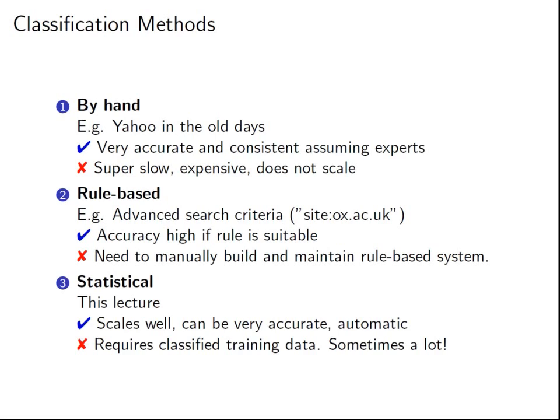One step up from manual classification is rule-based classification. For instance, advanced search criteria is a type of rule-based classification — say, you only want results from '.co.uk'. That's a hard-coded rule, and you know exactly what to look for in a website to put it into a class. This is very accurate if the rules are suitable to your task. The downside is you need to manually build and maintain this rule-based system; if you want to add a new criterion, you need to come up with a new rule.